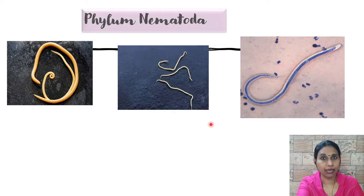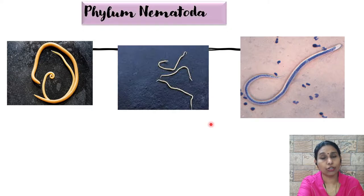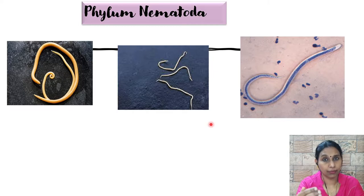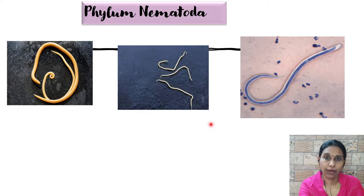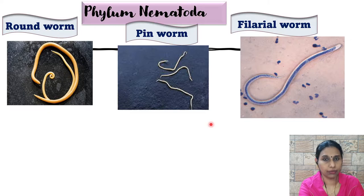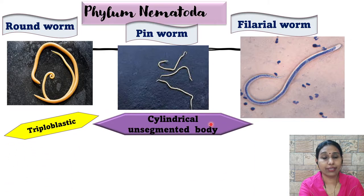Coming to the next phylum — phylum Nematoda. This also consists of worms. The three phyla consisting of worms are Platyhelminthes, Nematoda, and Annelida. Nematoda organisms have a cylindrical, unsegmented body — they are cylindrical in shape but do not have segments. Examples include roundworm, pinworm, and filarial worm.